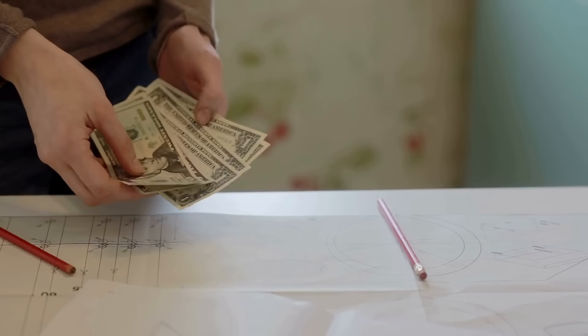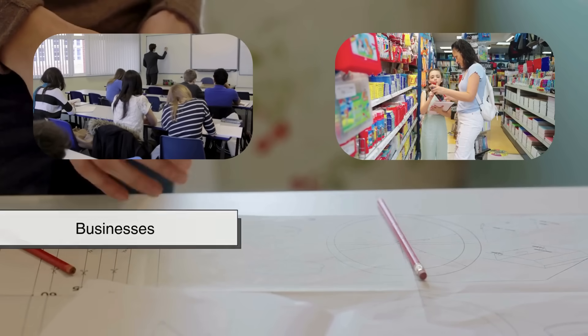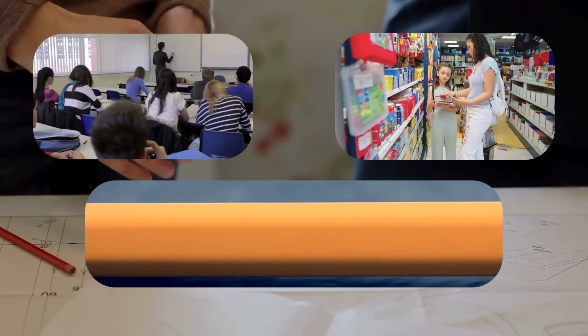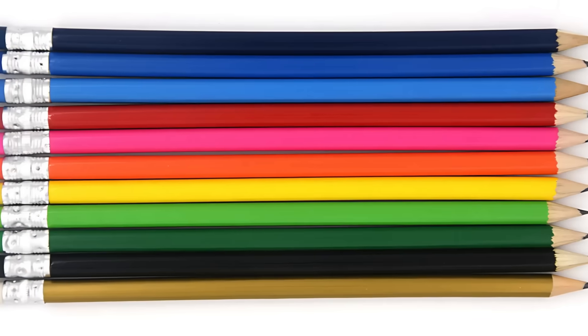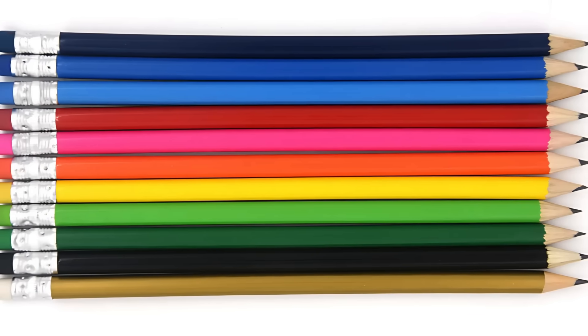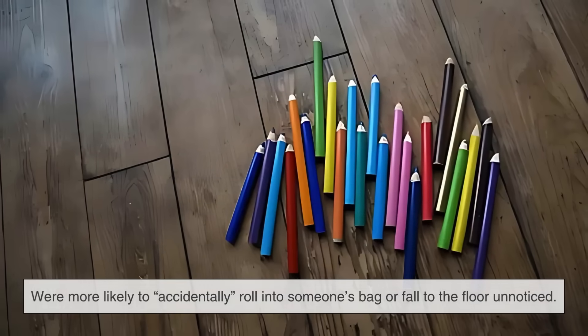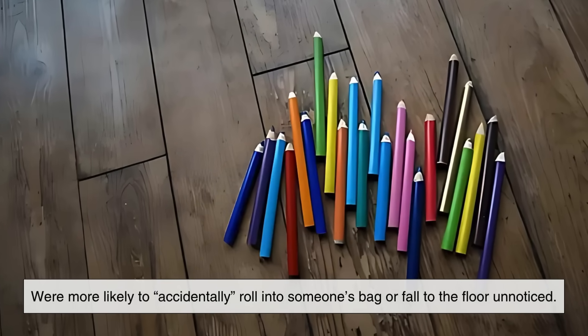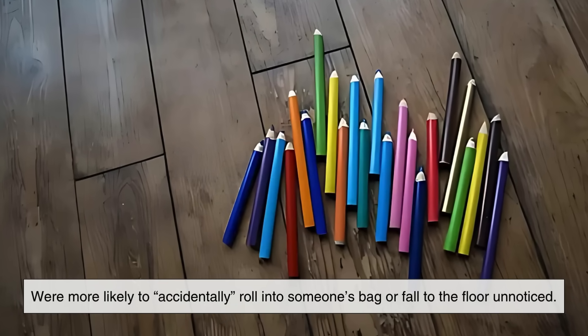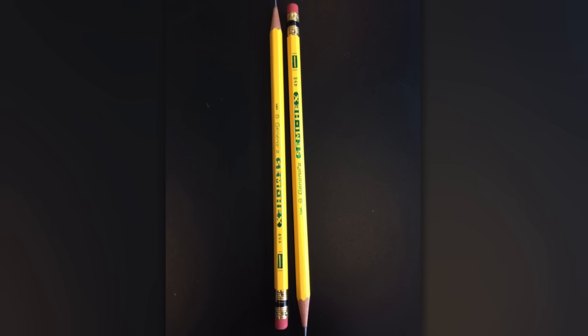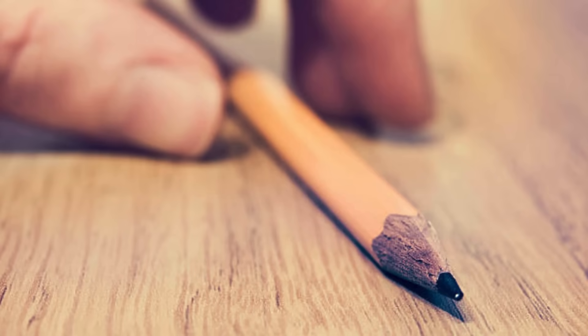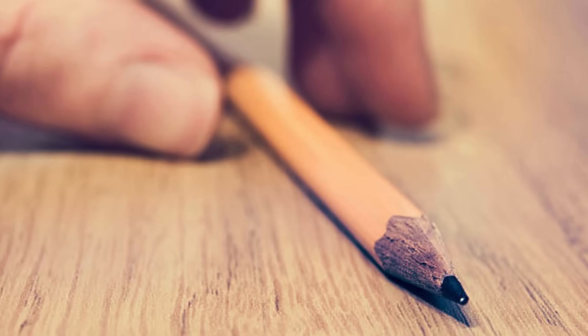Now, remember when I mentioned theft prevention earlier? There's a quirky side note to this story. In some cases, schools and businesses would order hexagonal pencils instead of round ones because they were easier to keep track of. Round pencils, particularly expensive ones used for drafting or art, were more likely to accidentally roll into someone's bag or fall to the floor unnoticed. The hexagonal shape not only kept pencils in place, but made them less likely to be scooped up unintentionally or intentionally.